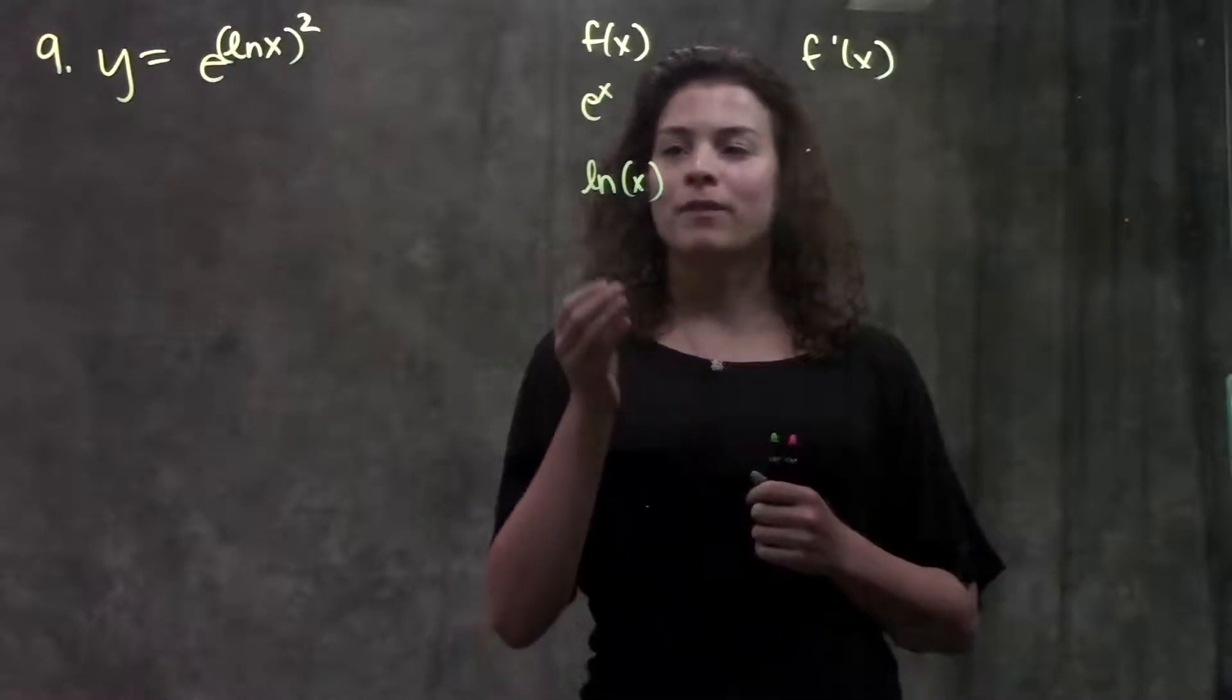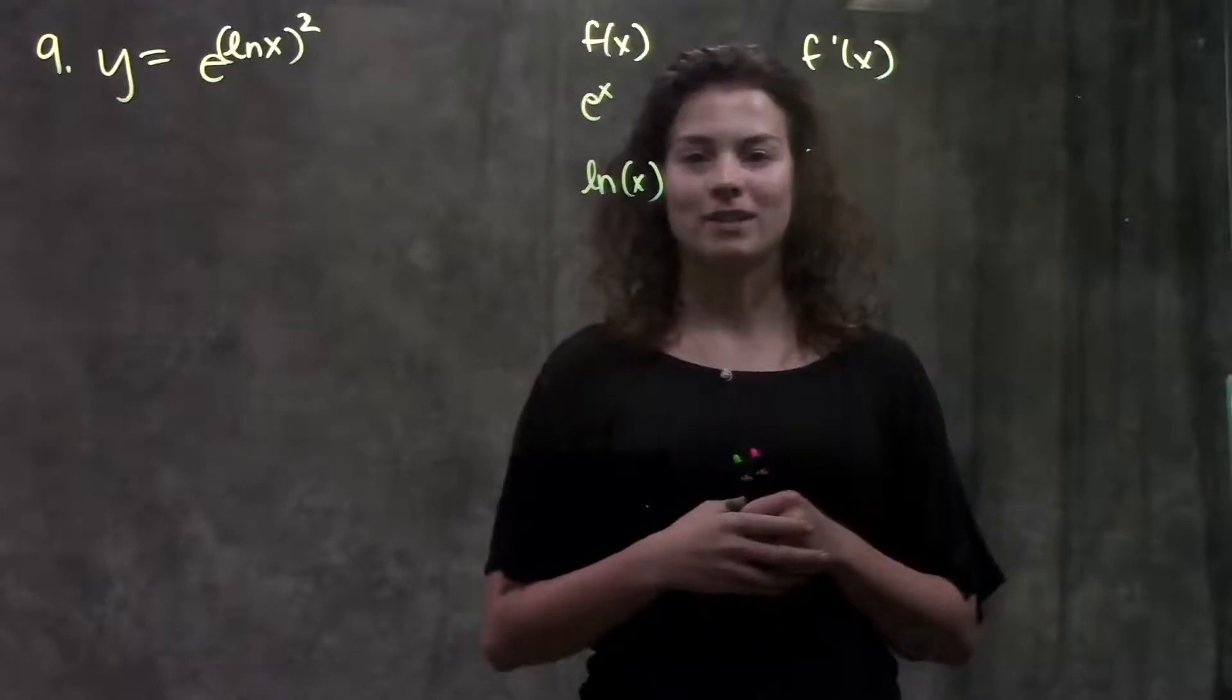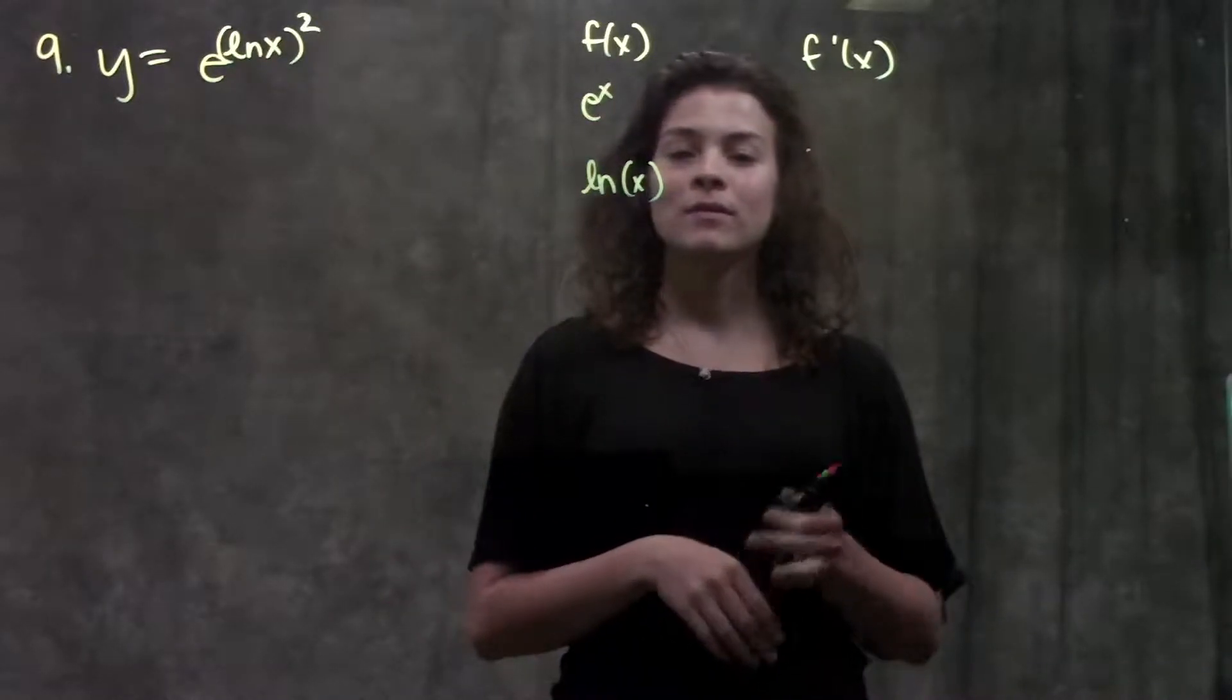Number 9 involves rules for how to take the derivative of e to the x and ln x functions. Before we take the derivative, let's go through those rules.